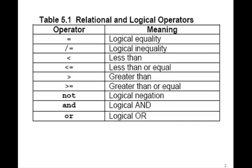So here are the relational operators and logical operators in VHDL. Equal is the logical equality. Slash equal is logical inequality, not equal. Less than is less than. Less than or equal is written this way. Greater than, greater than or equal. And then not, and, and or are the logical negation, logical AND and logical OR.